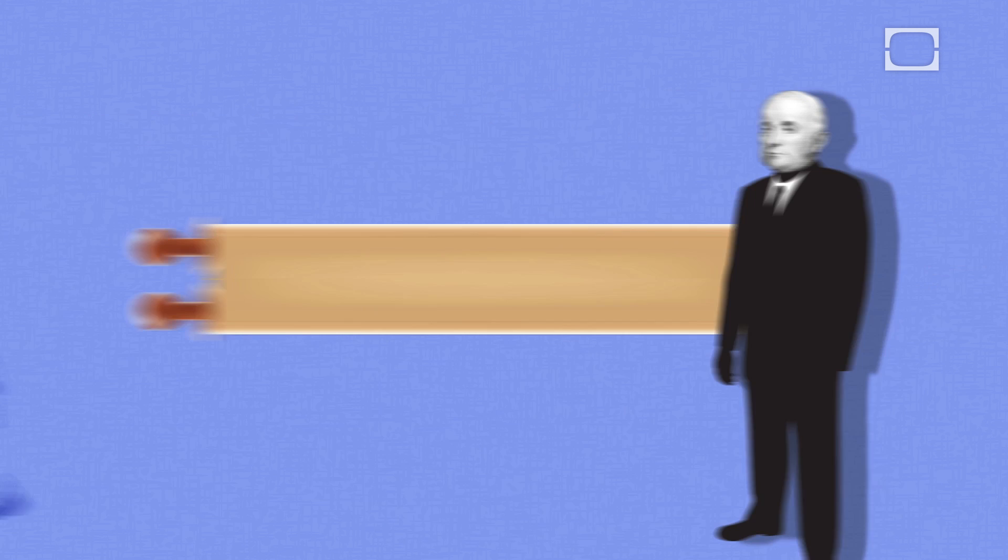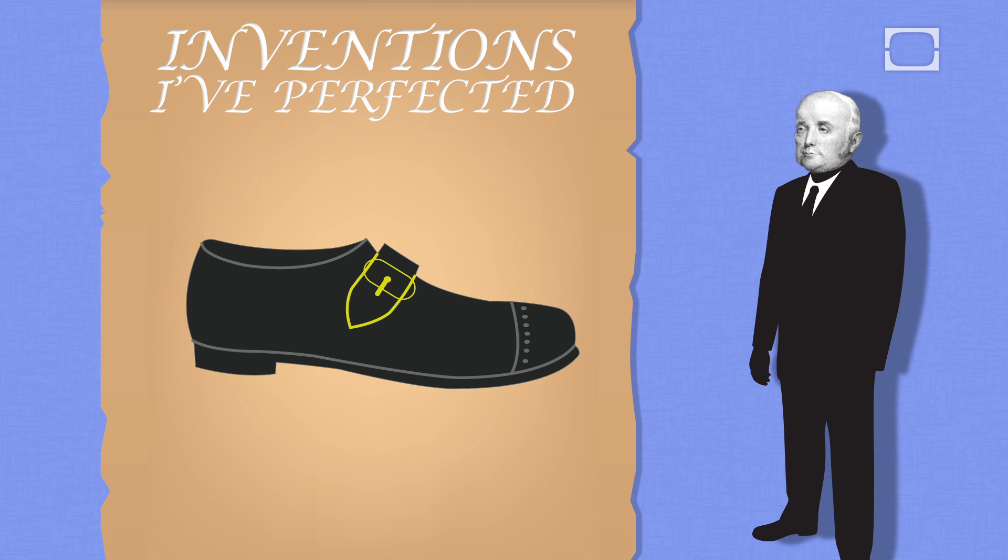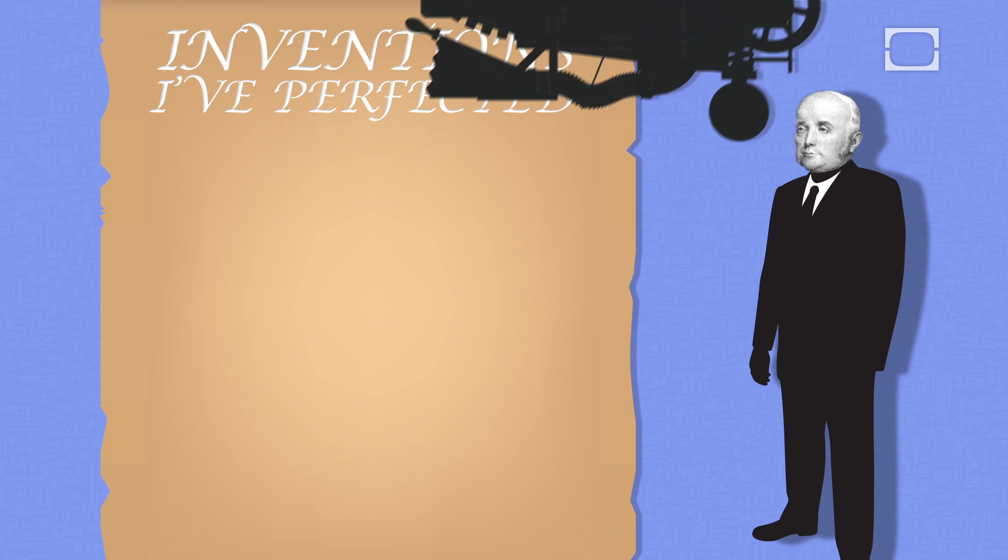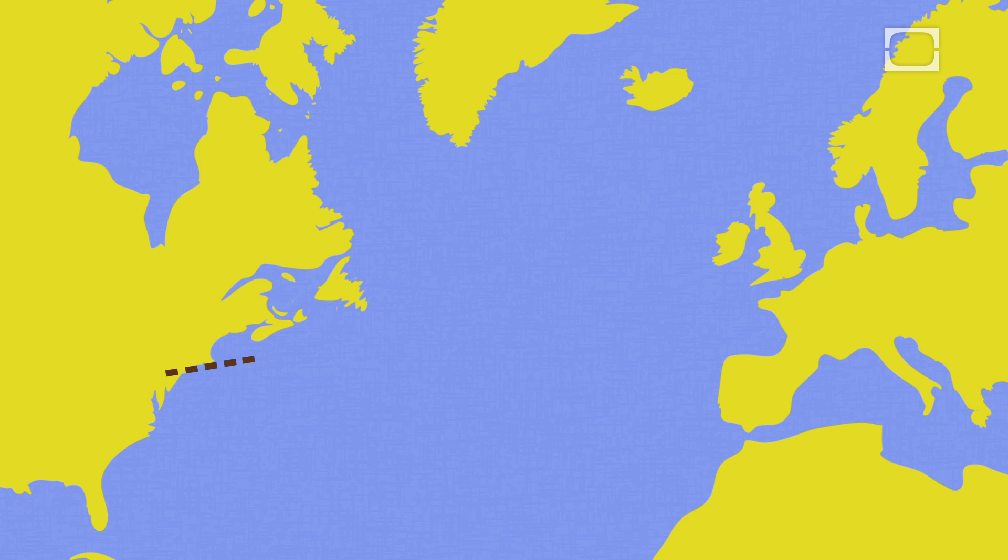Perkins always had a knack for invention. By the age of 15, he'd already perfected a method for creating gold-plated shoe buckles. Nine years later, he designed a machine that cut nails and added heads to each of them. Perkins next improved the way banknotes were engraved and moved to England in 1818 to supply local banks with copper plates.